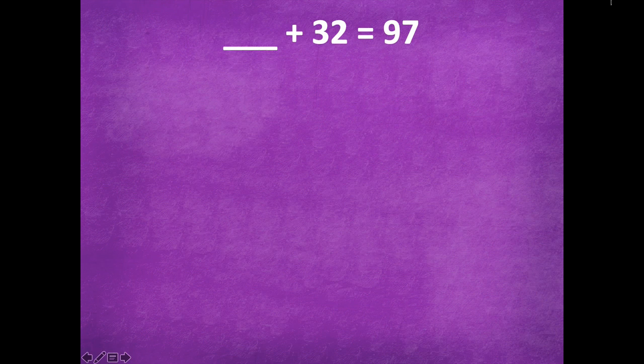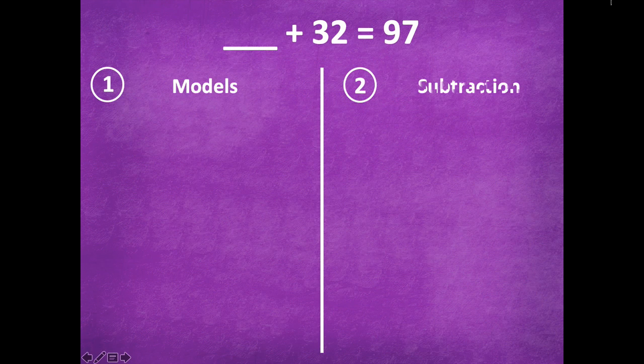All right, here's one more for you friends. So this time we're starting with our missing addend. So blank plus 32 equals 97. But don't let that fool you friends, we're going to start with the same methods. We can either use the models or the subtraction.